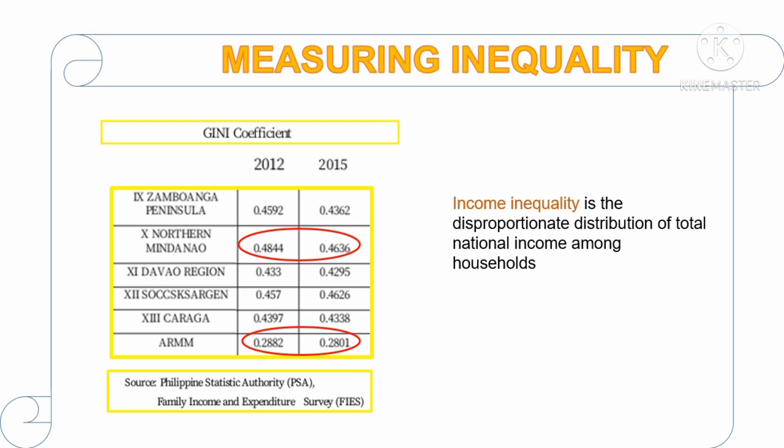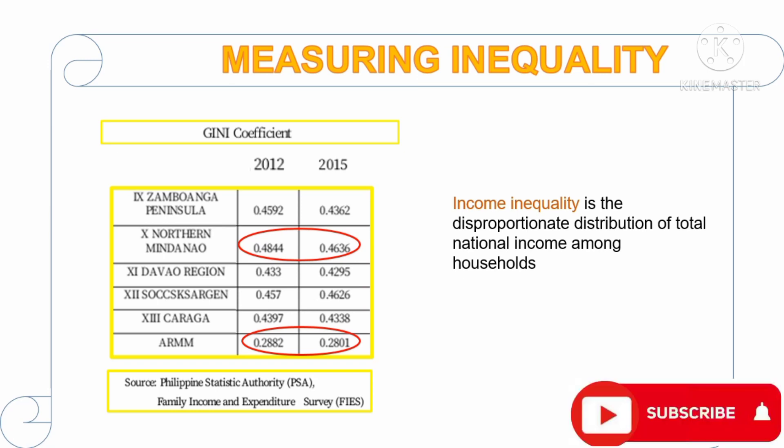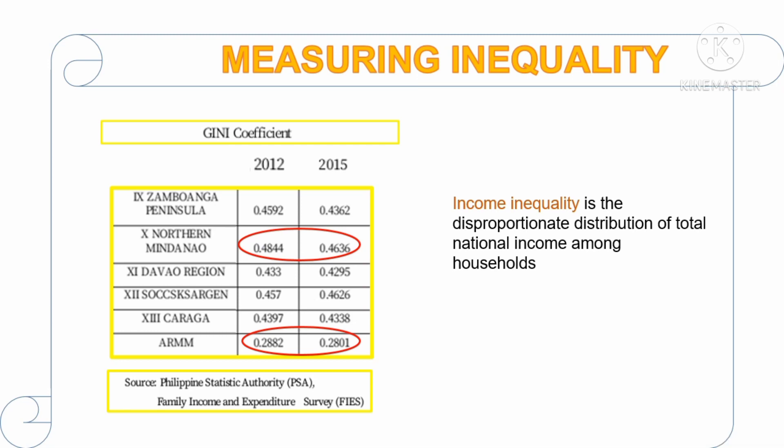Among regions in the Philippines, income inequality is seen as higher in some regions while low in others. In Mindanao, for example, Northern Mindanao has more income inequality relative to the other regions, while the Bangsamoro Autonomous Region in Muslim Mindanao, or BARMM, has the lowest income inequality in 2015. As shown in the table, the data show that income distribution in BARMM is relatively more equal than the rest of the regions in Mindanao.